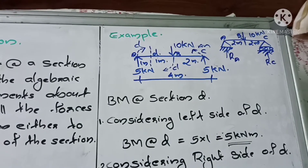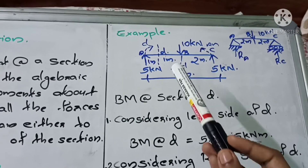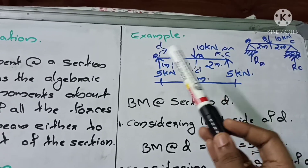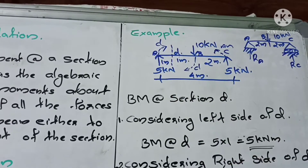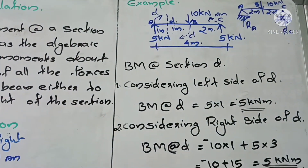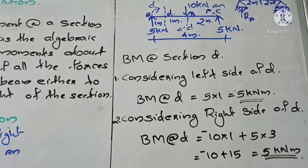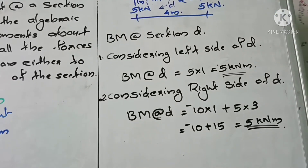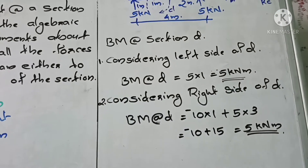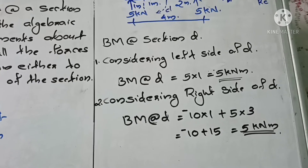We have to find the bending moment at section D, which is at the center of AB. There are two methods: first, considering the left side of D, and second, considering the right side of D. Both methods are correct — you can use either one.